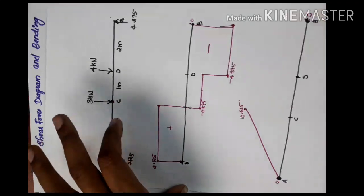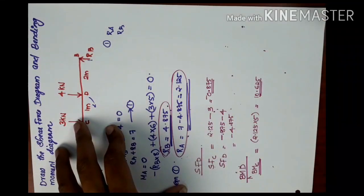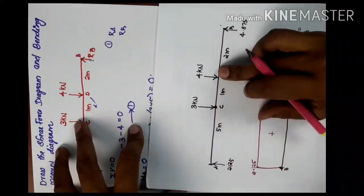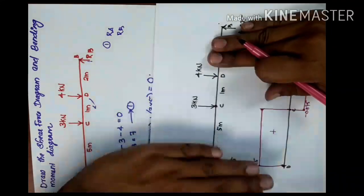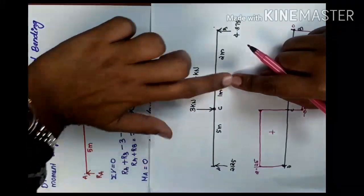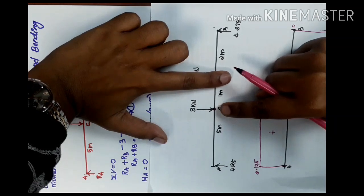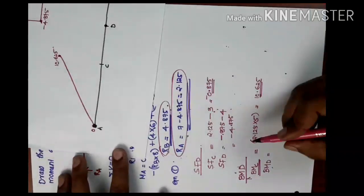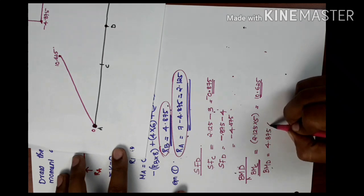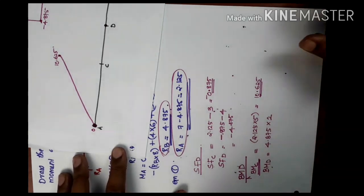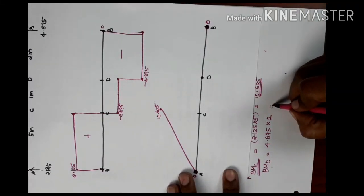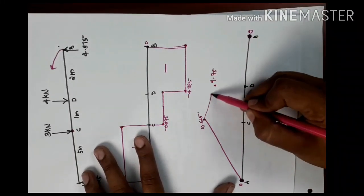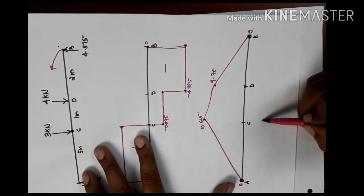Now let's find the bending moment at D. For point D we take the right side. From the right, RB equals 4.875 and the distance from B to D is 2 metres. So the bending moment at D equals 4.875 into 2, which equals 9.75. I mark the value 9.75 at D.